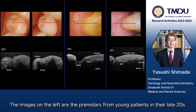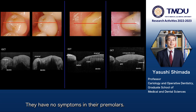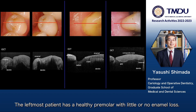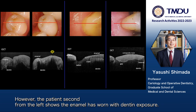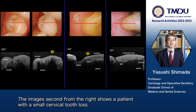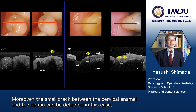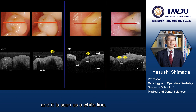The OCT system can be utilized for the diagnosis of tooth wear. The images on the left are the premolars from young patients in their late twenties with no symptoms. OCT imaging was performed along the red line in the upper images. The leftmost patient has a healthy premolar with little or no enamel loss. However, the patient second on the left shows the enamel has worn with dentine exposure. The image second on the right shows a patient with a small cervical tooth loss — a small defect at the root surface clearly seen in the OCT. Moreover, a small crack between the cervical enamel and the dentine can be detected in this case, seen as a white line.